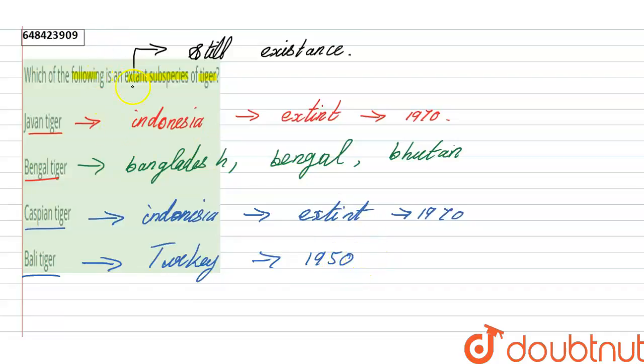So the question is extant subspecies and which of the following is extant? The answer is option B, Bengal tiger.